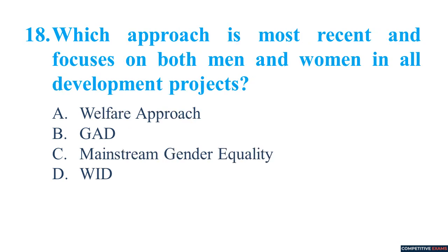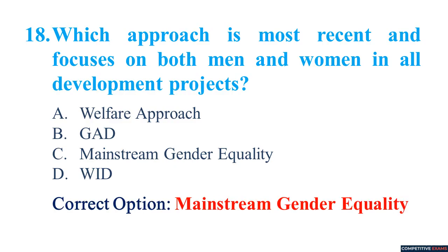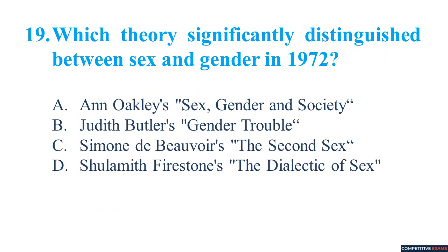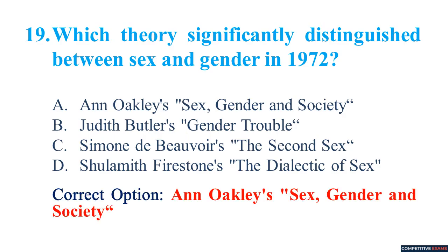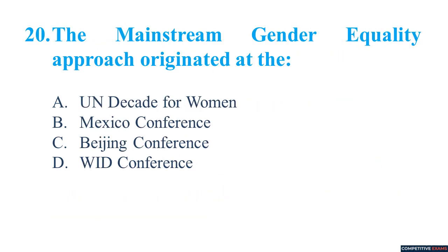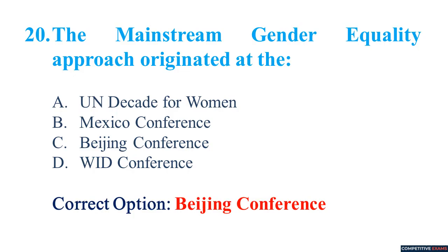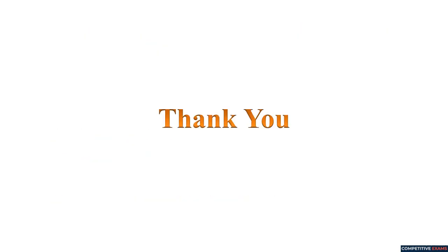Which approach is most recent and focuses on both men and women in all development projects? Mainstream Gender Equality. Which theory significantly distinguished between sex and gender in 1972? Ann Oakley's Sex, Gender and Society. The Mainstream Gender Equality approach originated at the Beijing Conference. Thank you for watching this video. Stay blessed.